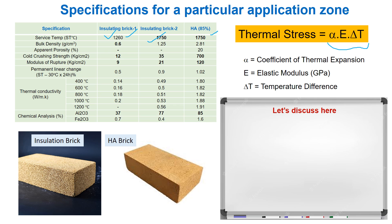Insulation brick one, consisting of low density — meaning high porosity — may float on water. It is also an excellent choice to protect temperature up to 1260 degrees centigrade. This brick has very high porosity, very low CCS, and low MOR. Thus, it has low elastic modulus, resulting in low thermal stress, and needs low stress to break.